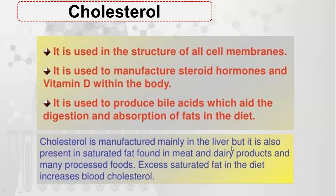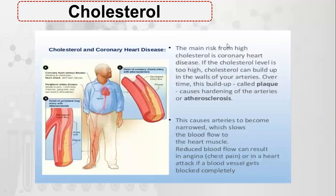Cholesterol is mainly produced in the liver, but it is also present in saturated fats like meat and dairy products and many other processed foods. Excess saturated fat in the diet increases blood cholesterol. If blood cholesterol increases, the risk of coronary heart diseases also increases. As cholesterol increases in the body, plaque accumulates in the arteries, causing their hardening — a condition called atherosclerosis.